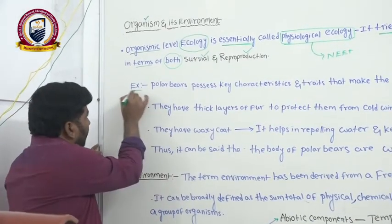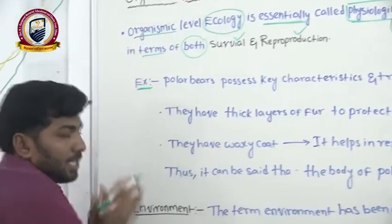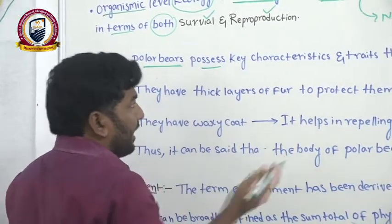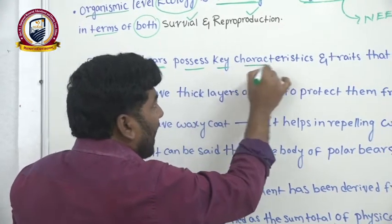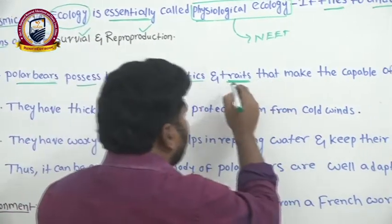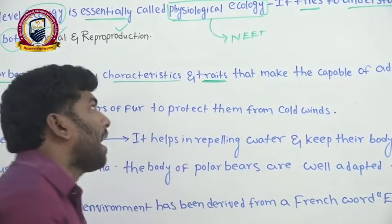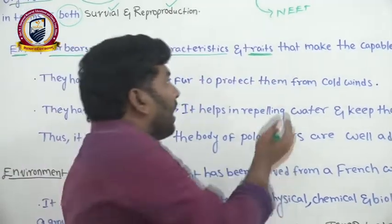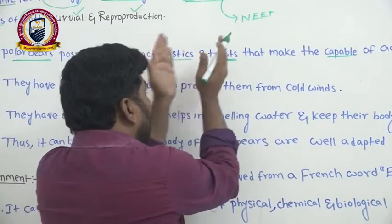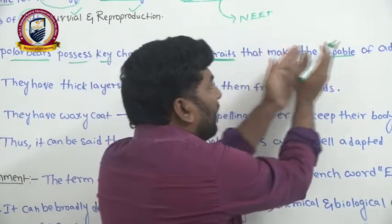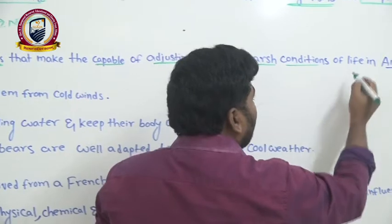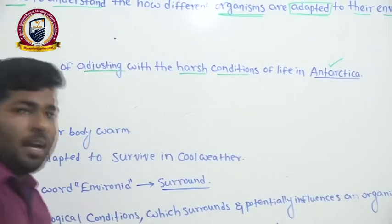For example, if we take polar bears to understand this definition: polar bears possess very important characteristics and traits. Traits means alternatives of genes, and the characteristics produced due to changes happening in the genes make them capable of adjusting to the harsh conditions presented in the Antarctica region.